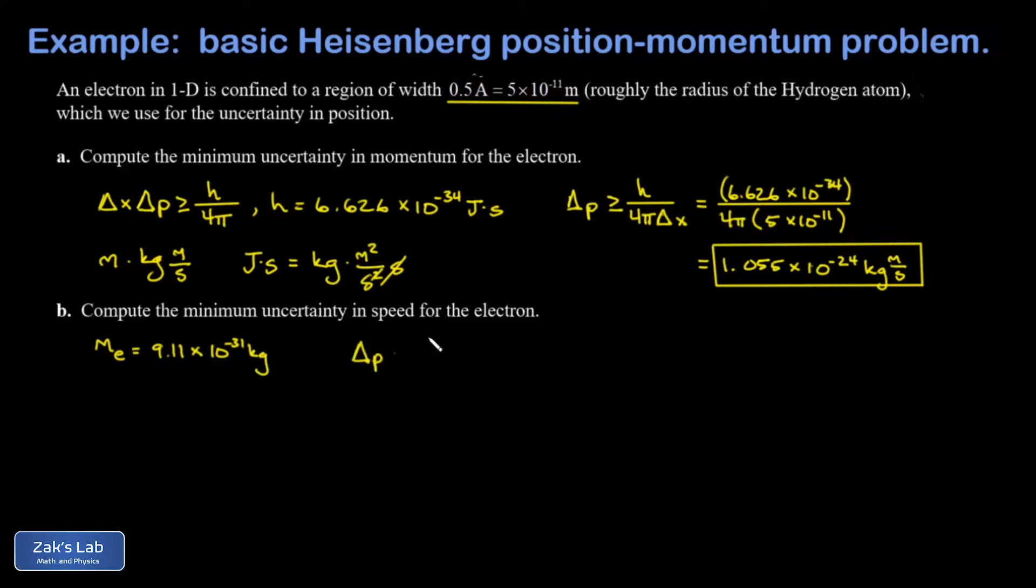Because momentum is mass times velocity, the uncertainty in momentum is mass times the uncertainty in velocity, taking the mass to have no uncertainty in comparison. Solving for Δv and plugging in the numbers gives 1.16×10⁶ meters per second.